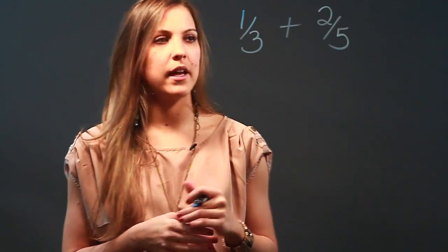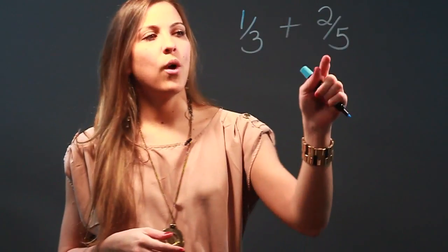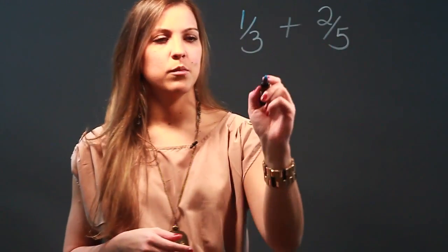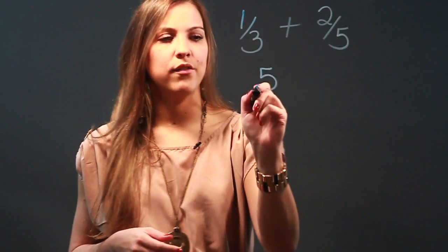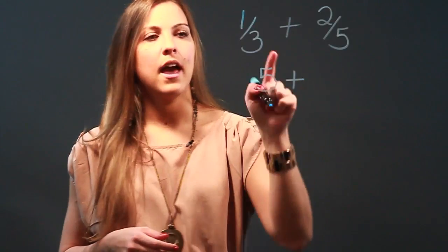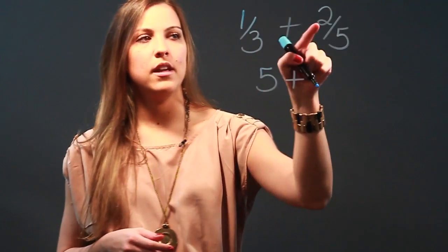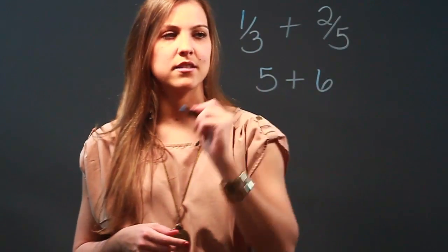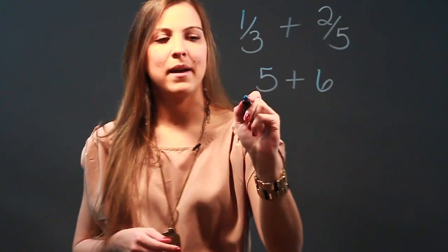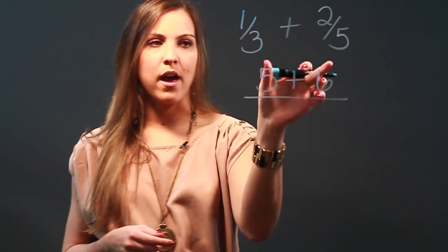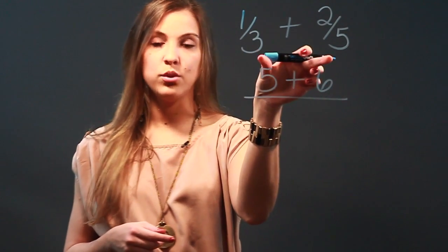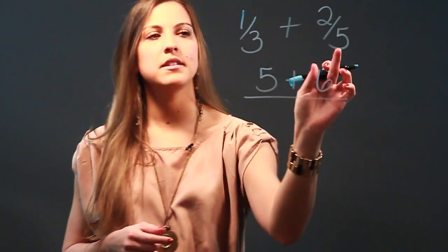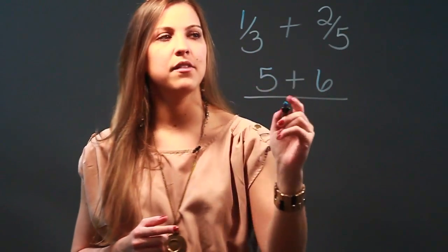So I'm going to do five times one, which is five. I'm going to bring down my plus sign, and I'm going to do three times two, which is six. Now my denominator is going to be the product of the two denominators, so I'm going to do three times five, which is fifteen.